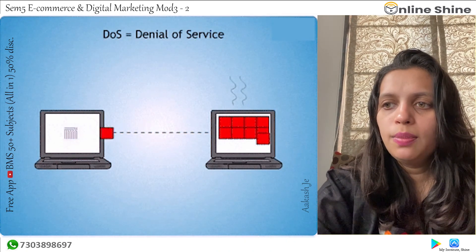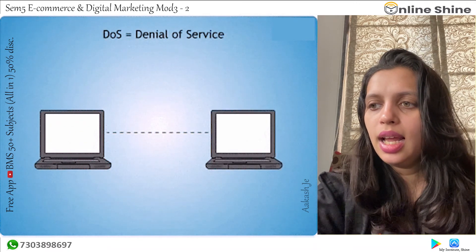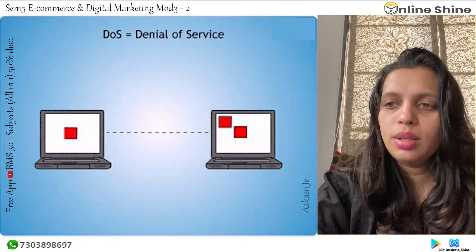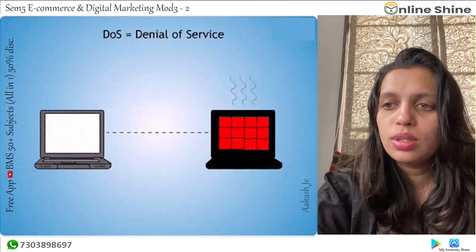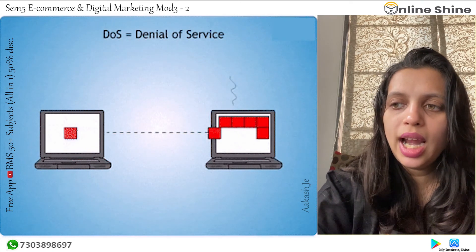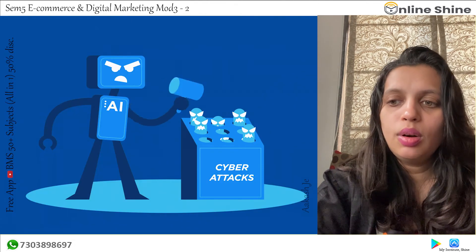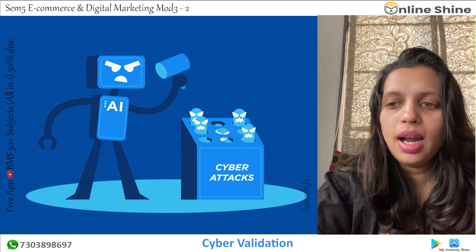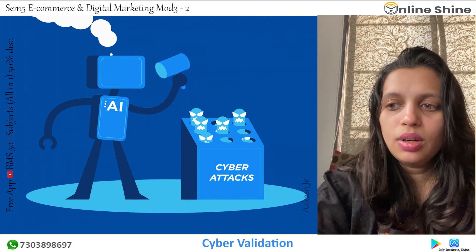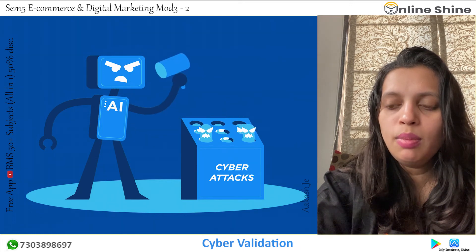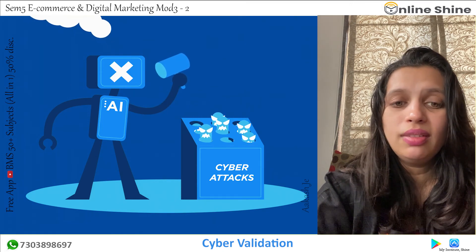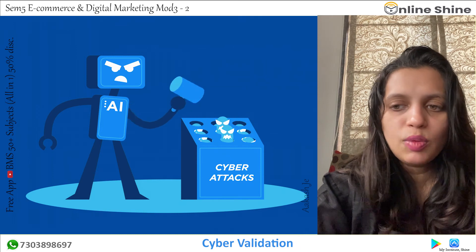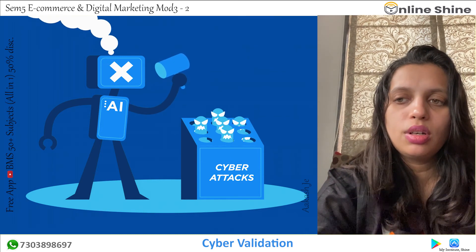Phishing can be defined as the act of sending an email to a user falsely claiming to be an established legitimate enterprise, in an attempt to scam the user into surrendering private information that will be used for identity theft. Cyber extortion is the act of demanding someone's data using computers. It disturbs the victim's business image by corrupting data or making it unusable. It is one form of cybercrime.